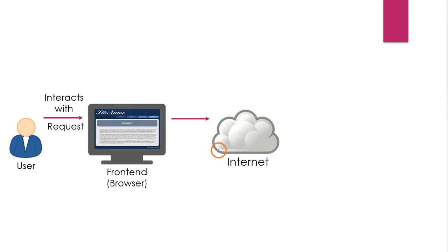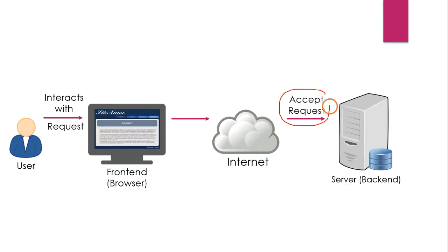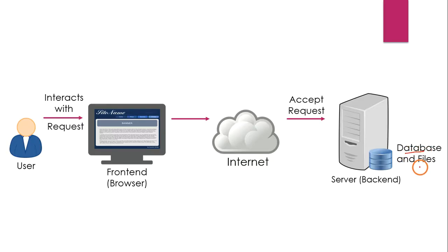The browser takes the request from the user and forwards it through the internet. The internet contains many devices but we won't bother about them. The request goes through the internet and reaches the server. Your university will maintain a server somewhere — the server is typically called the backend. The server takes the request, processes it, and since you are accessing the university examination portal, the university stores all results in a database or files. The server retrieves that data.